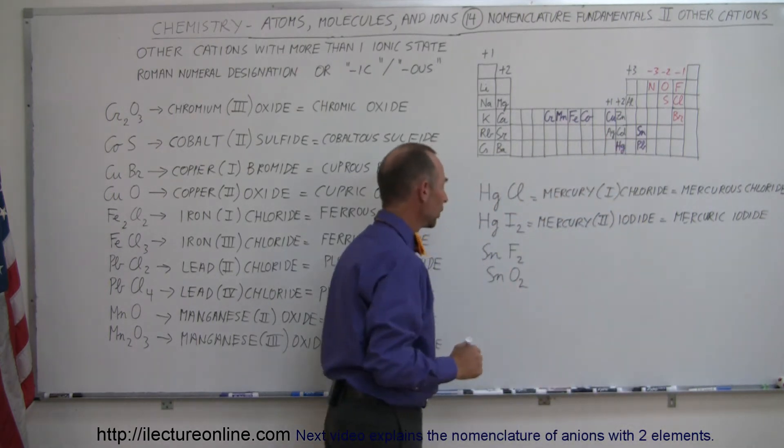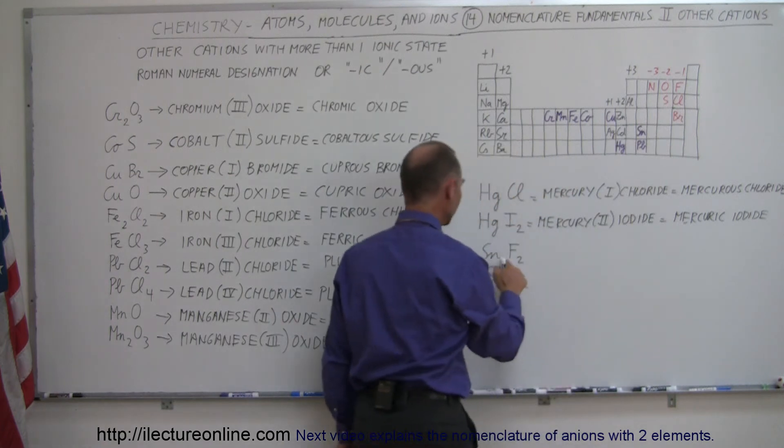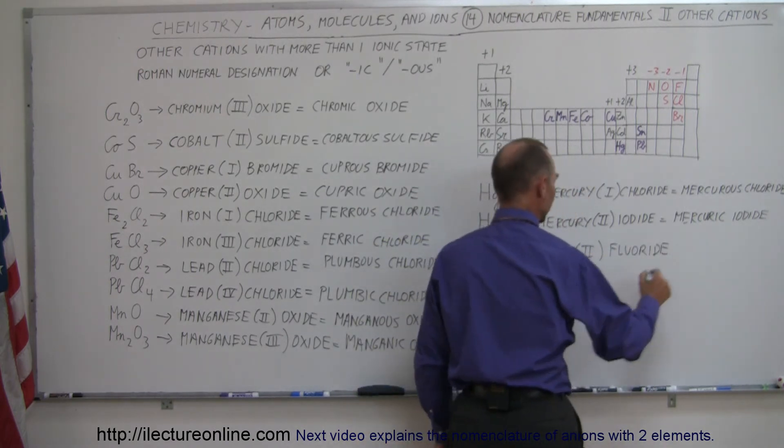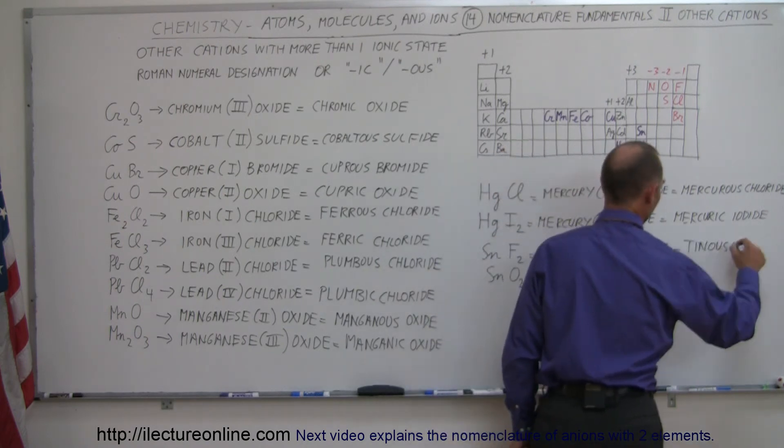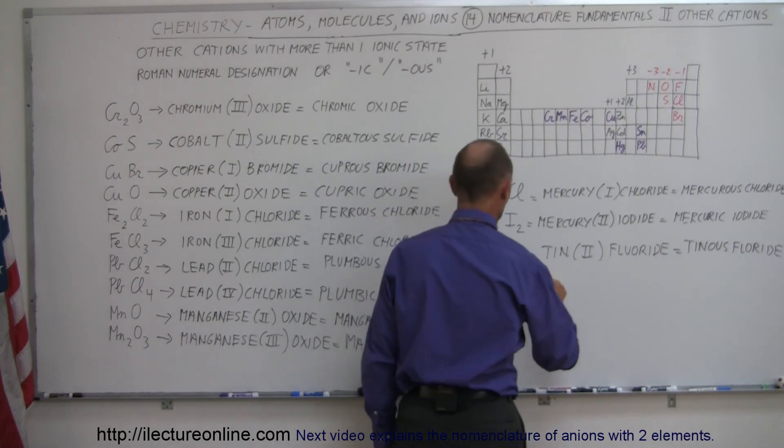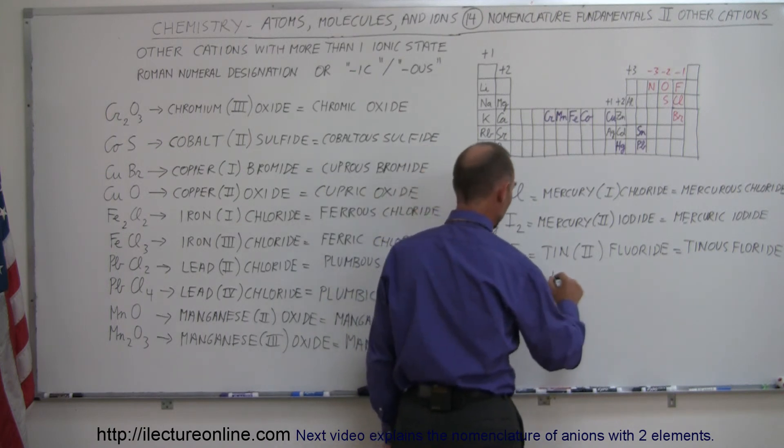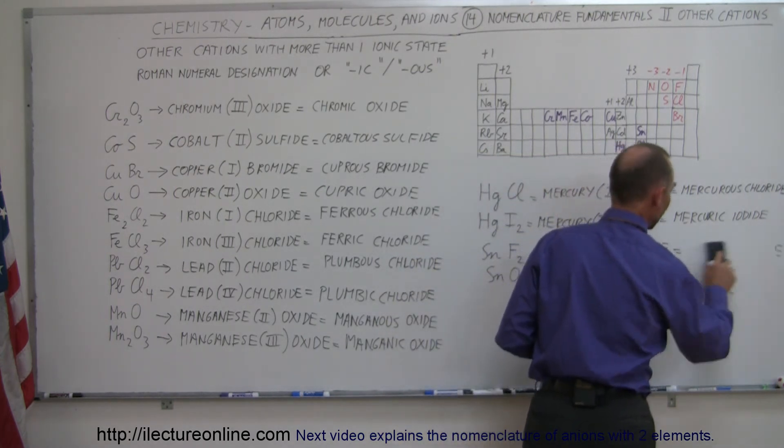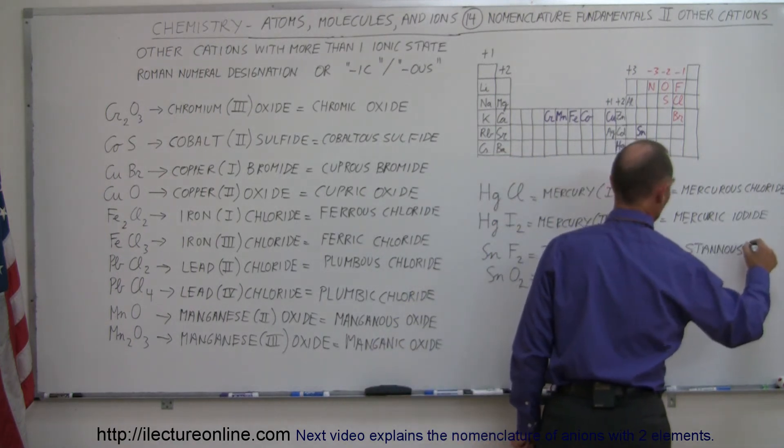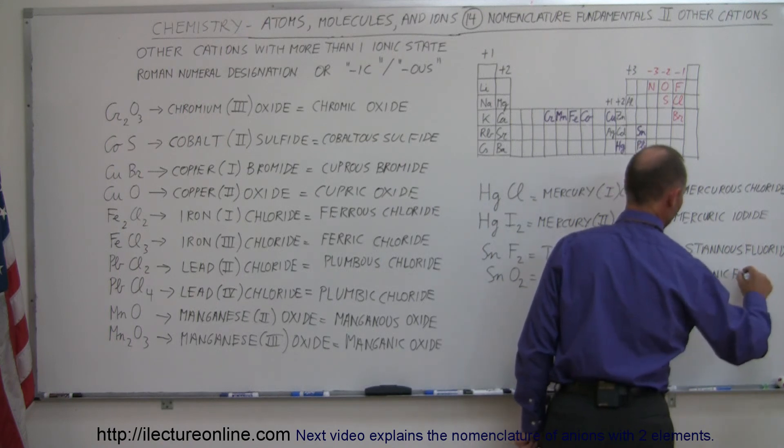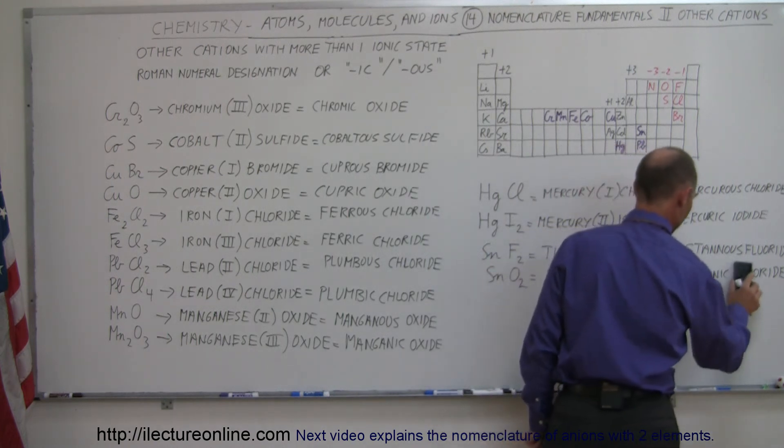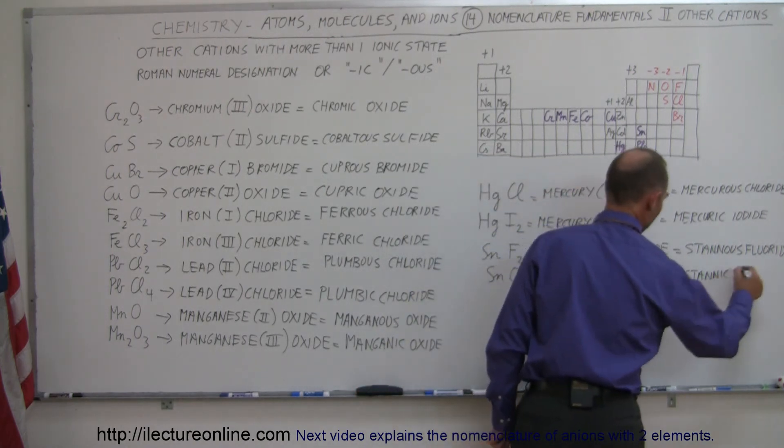And then finally with tin. We have fluorine, which is at the minus one state, but we have two of them, so this would be tin two fluoride, and so this would be called stannous fluoride. And here we have oxygen at the minus two state, but there's two of them, so that would be tin four oxide, which is equal to stannic oxide.